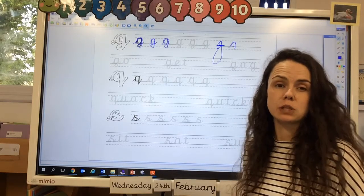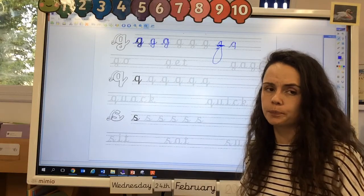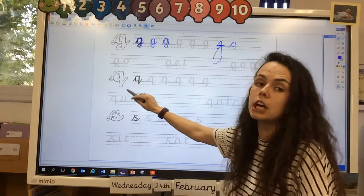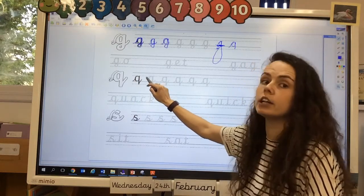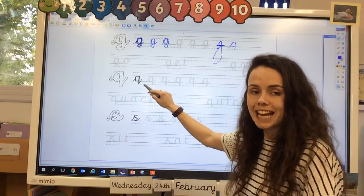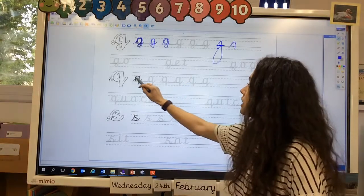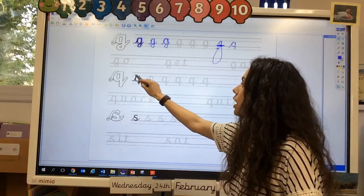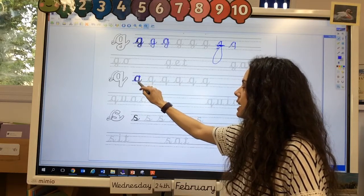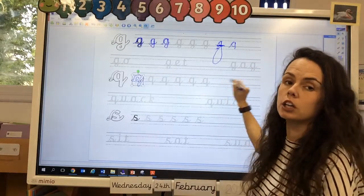So our next one now is Q. Can you remember the rhyme for Q? It's quite a tricky one to remember. And the way I remember it is if there was a queen on the inside. So we go up, around the queen's head, past her earrings, down her hair, and give her a flick. Okay? So we'll try that together. So up, around her head, up past her earrings, down her hair, and flick. So that's how what our Q looks like.